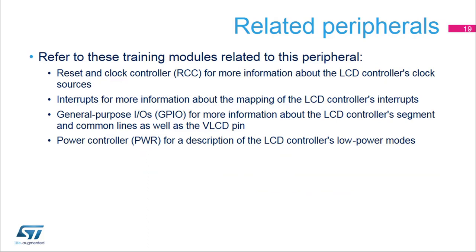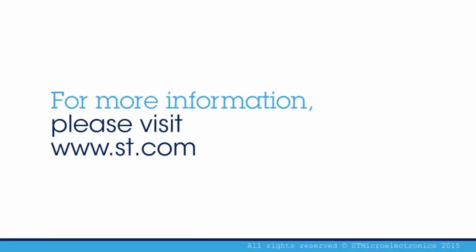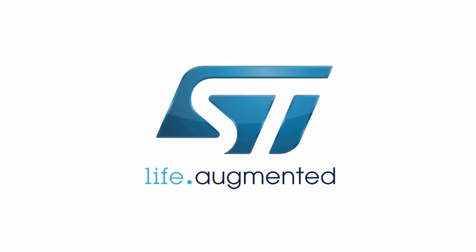Refer to the training modules for these peripherals linked to the LCD interface: the Reset and Clock Controller (RCC) for more information about the LCD controller's clock sources; Interrupts for more information about the mapping of the LCD controller's interrupts; General Purpose IOs (GPIO) for more information about the LCD controller's segment and common lines as well as the VLCD pin; and the Power Controller (PWR) for a description of the LCD controller's low power modes.